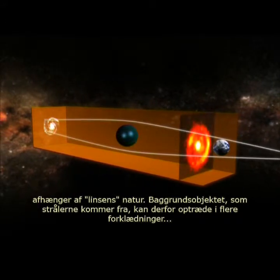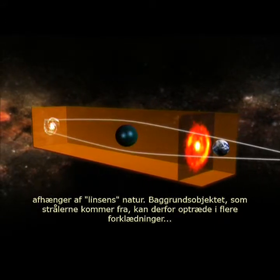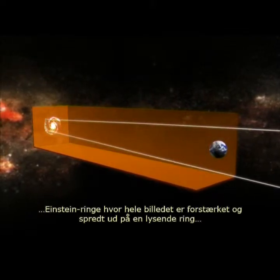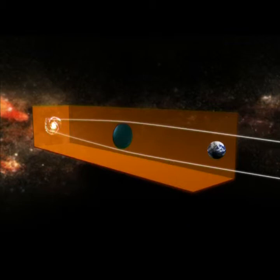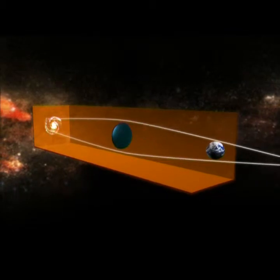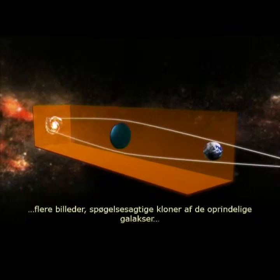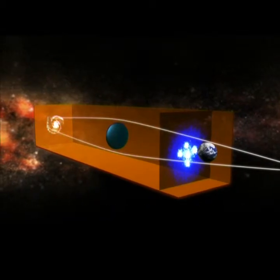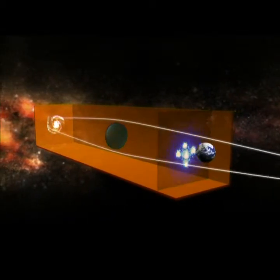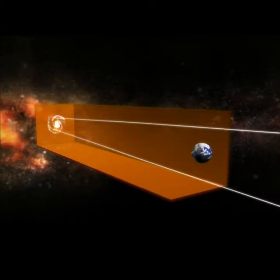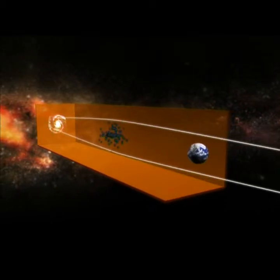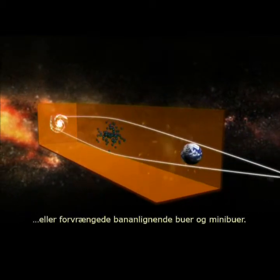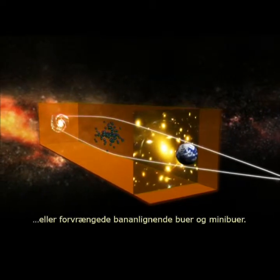Thus the background object can appear in several guises: Einstein rings, where the whole image is boosted and squeezed into a circle of light; multiple images, ghostly clones of the original distant galaxies; or distorted into banana-like arcs and arclets.